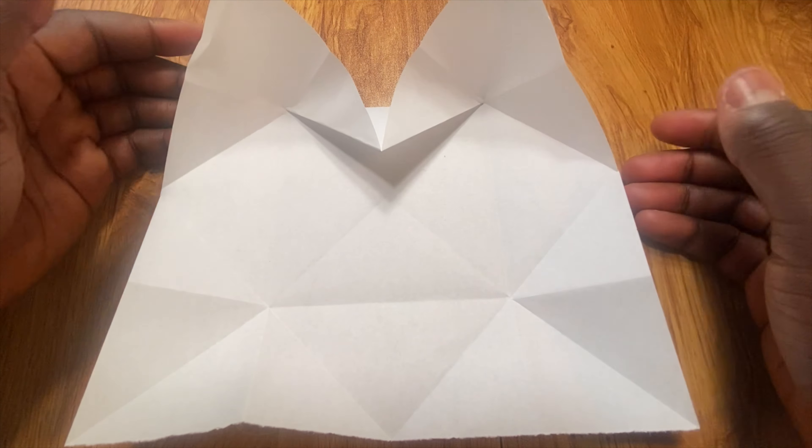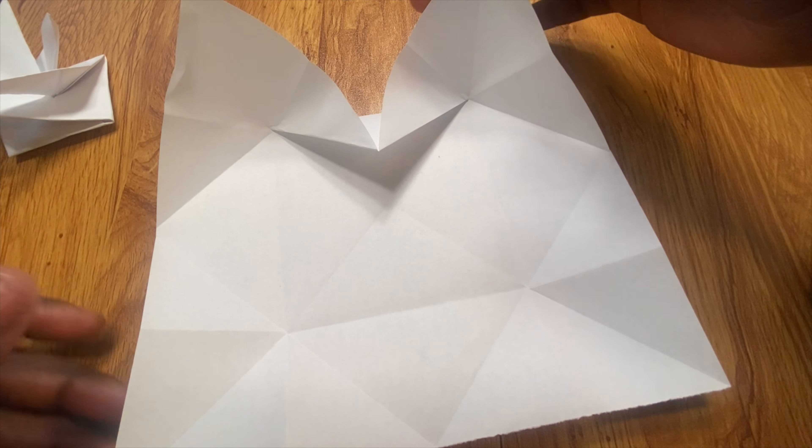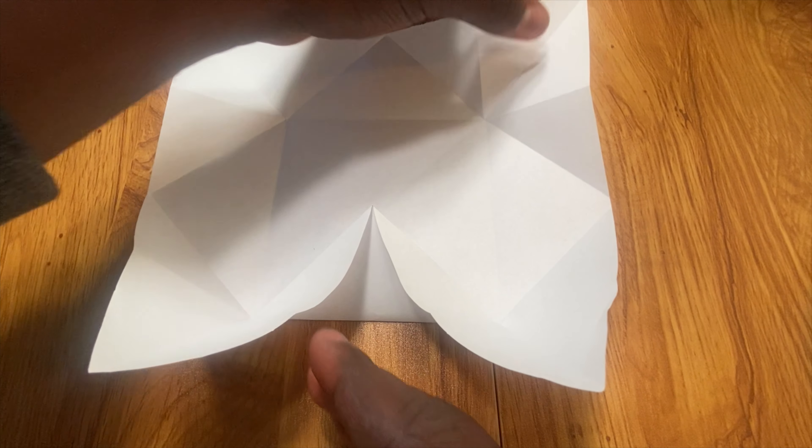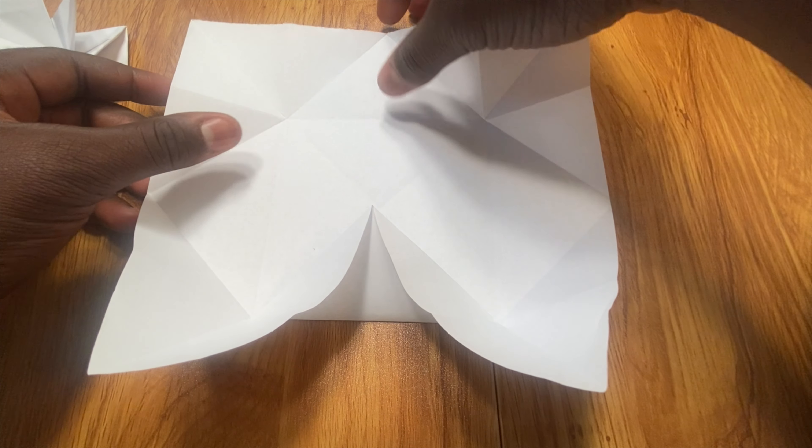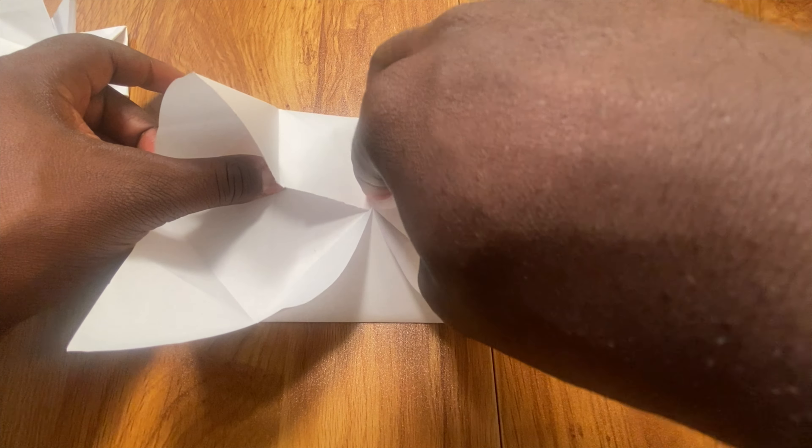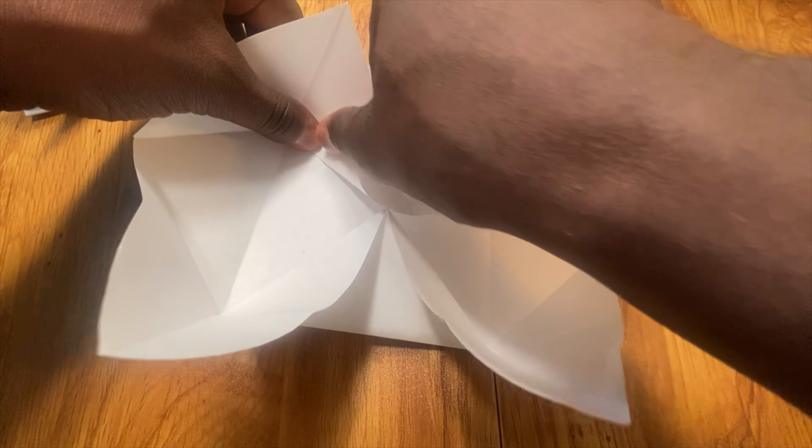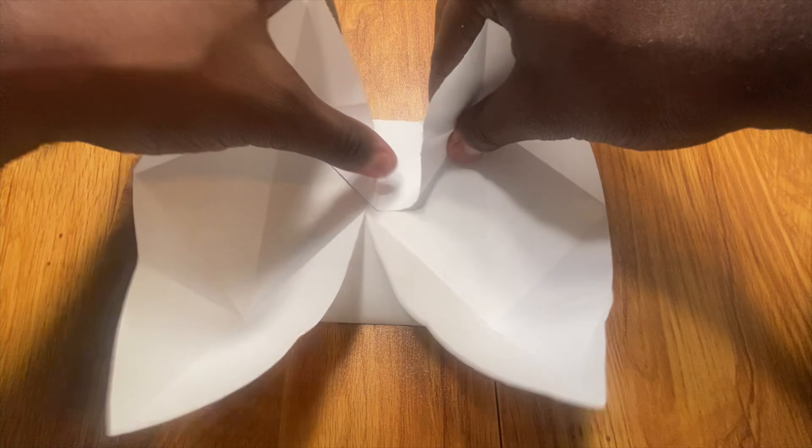And so your model should look like this. And then now we're just going to rotate and repeat that on the opposite edge. We're going to fold this point down and reverse fold these like this and like this.